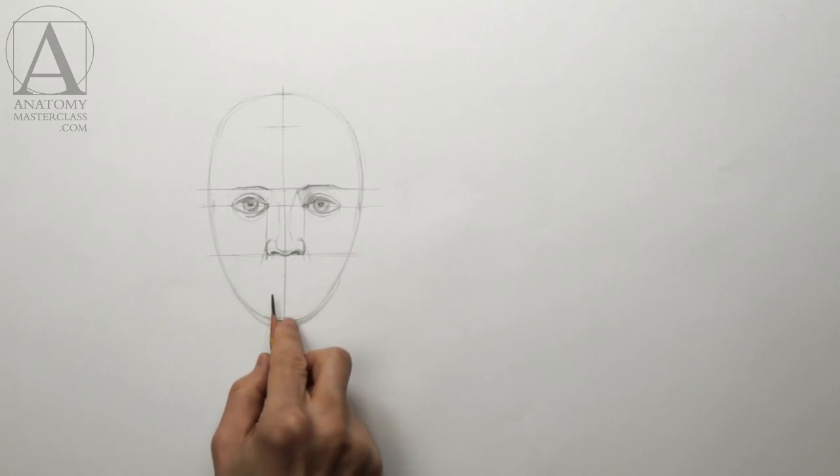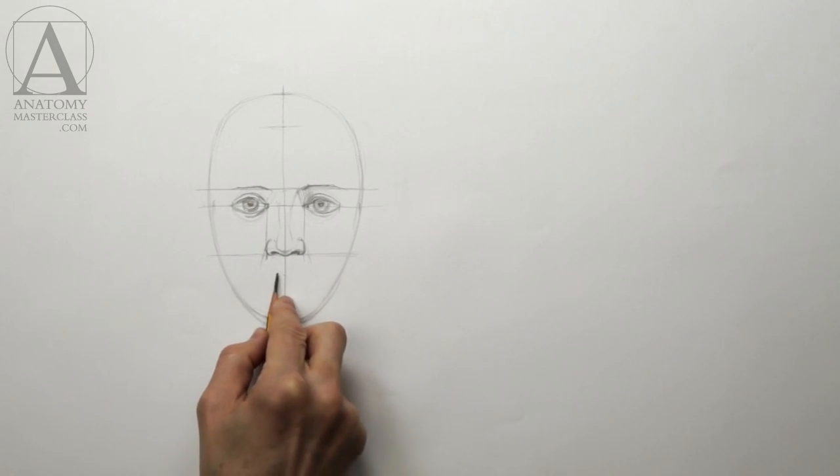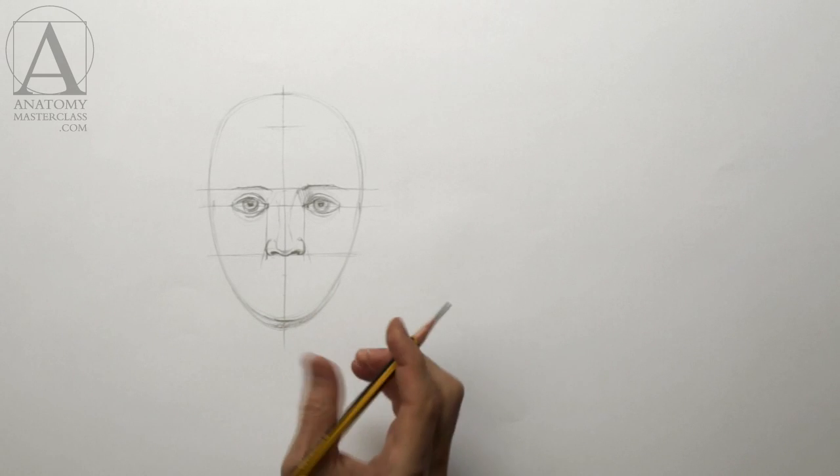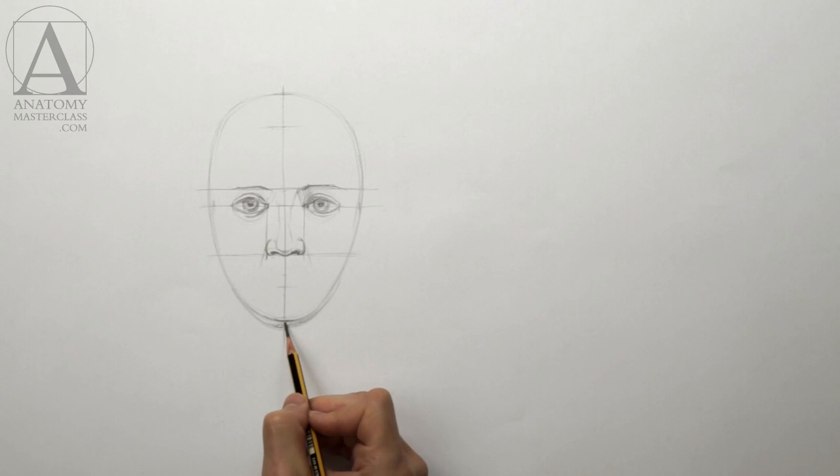Here's one amateur mistake you need to be aware about to avoid it. Don't place the mouth in the exact center of the distance between the base of the nose and the bottom edge of the chin. It is, in fact, located slightly higher than that.